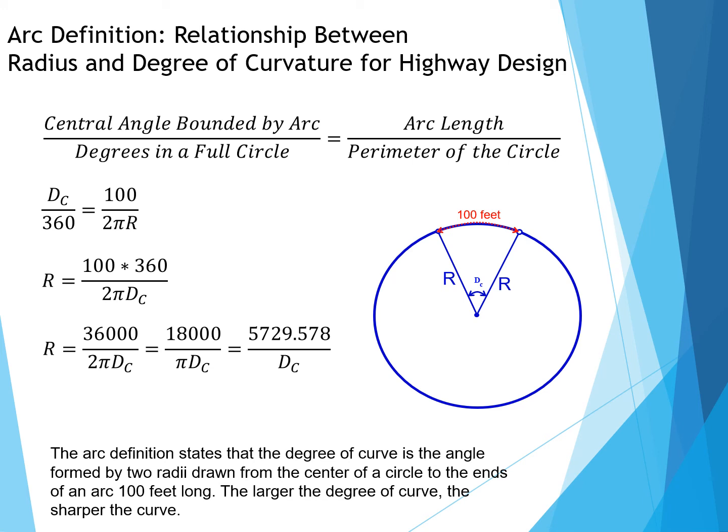Further simplifying, the radius equals 36,000 divided by 2 pi times the degree of curvature. Further simplifying, 18,000 divided by pi times the degree of curve. The equation we see most often is the radius equals 5729.578 divided by the degree of curvature.